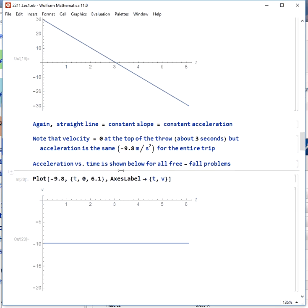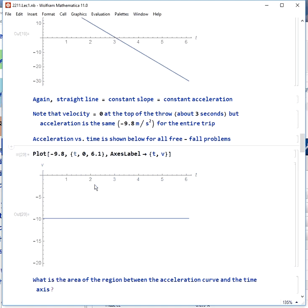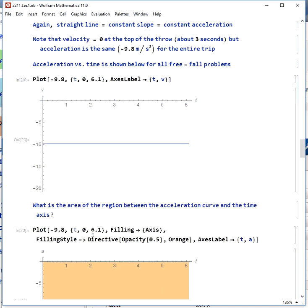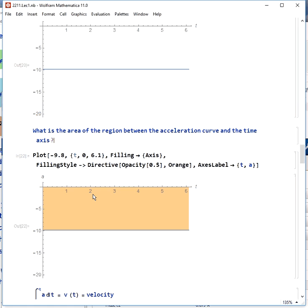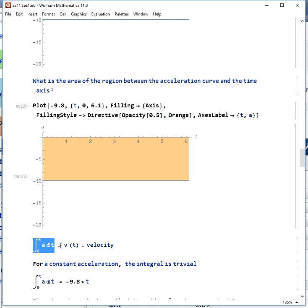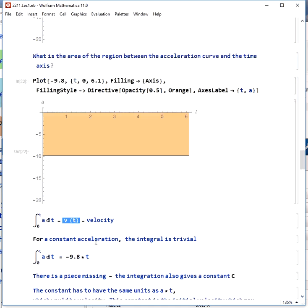If we plot acceleration versus time for a free fall problem where we always get negative 9.8 meters per second squared, we get this very simple graph of a straight line. If we look at the area of the region between this acceleration line and the time axis, we get something that looks like this. To find this area, we would take the integral. And if we take the integral with respect to time of a, we get velocity as a function of time.